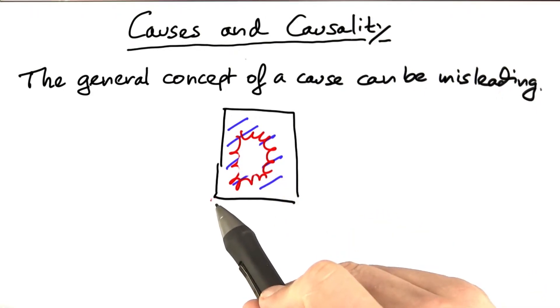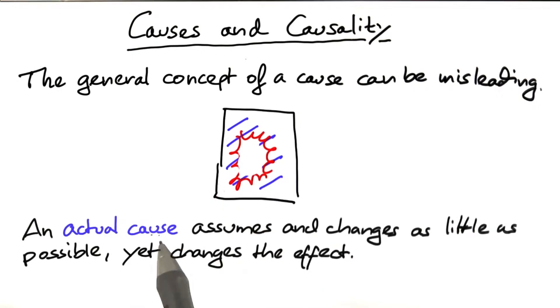So for a single effect, there can be multiple causes, and all of these are valid according to our earlier definition. This is where the concept of an actual cause comes in handy.